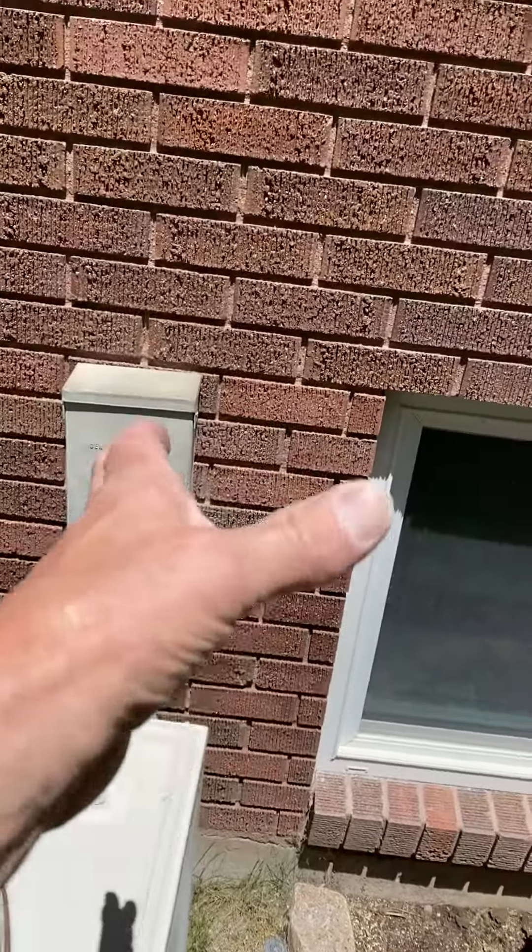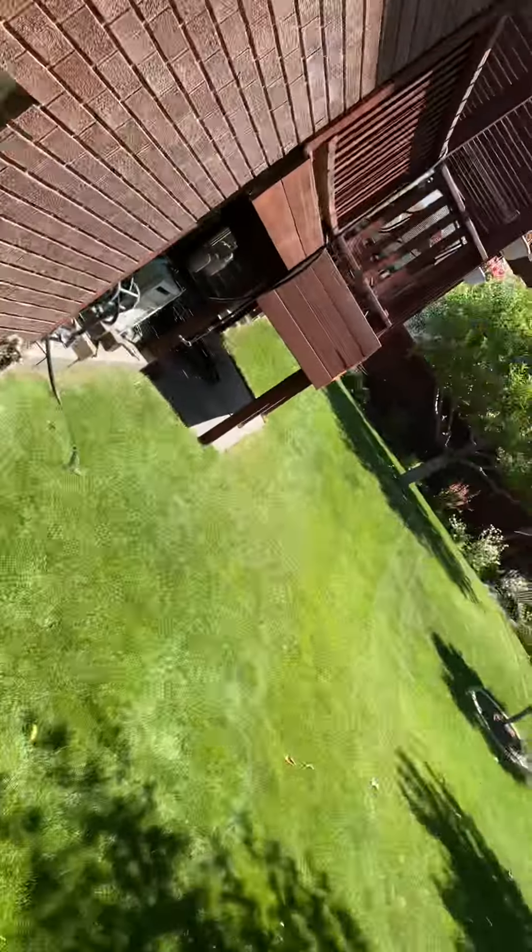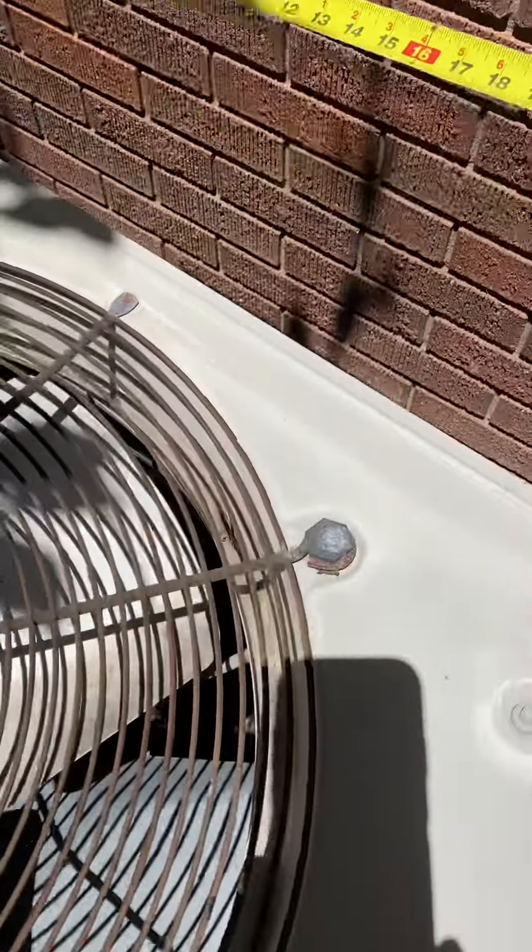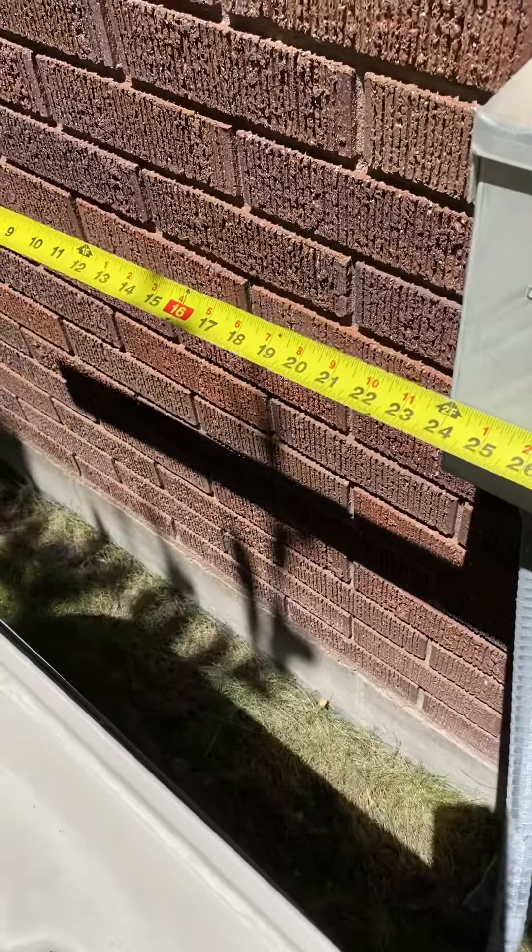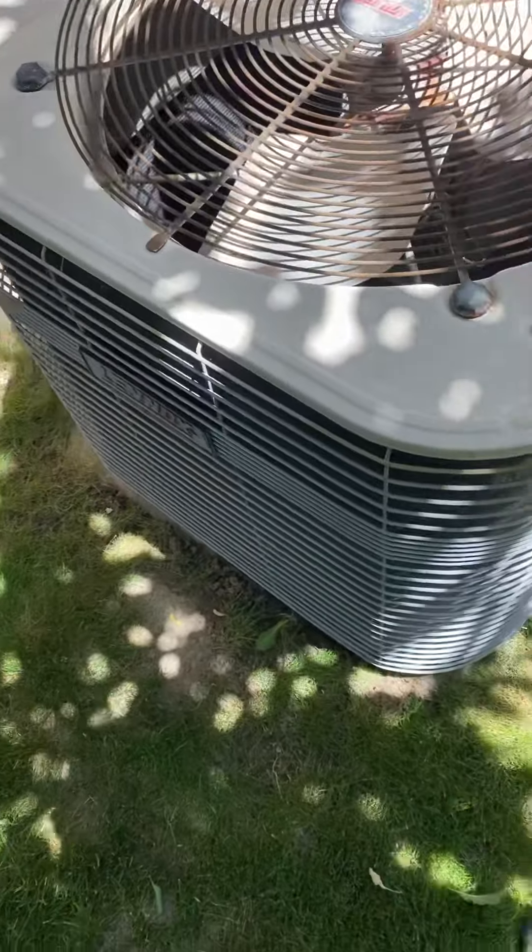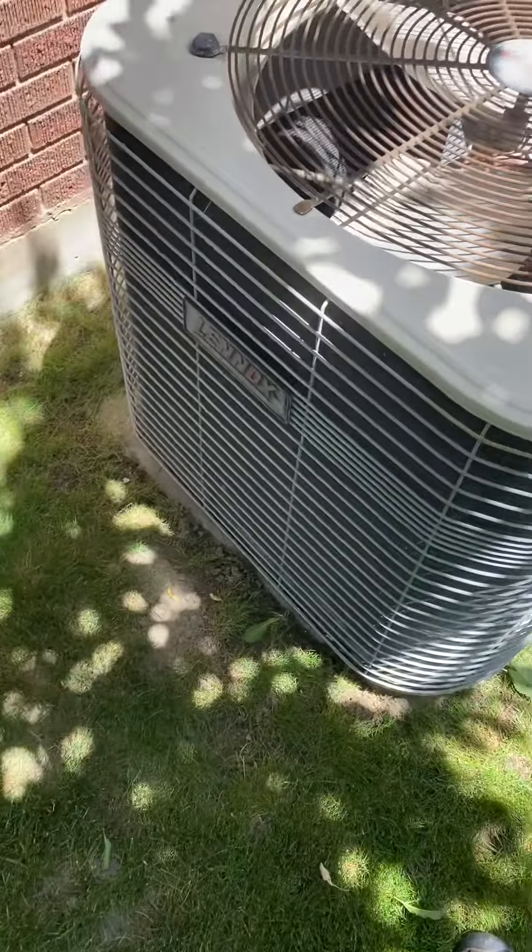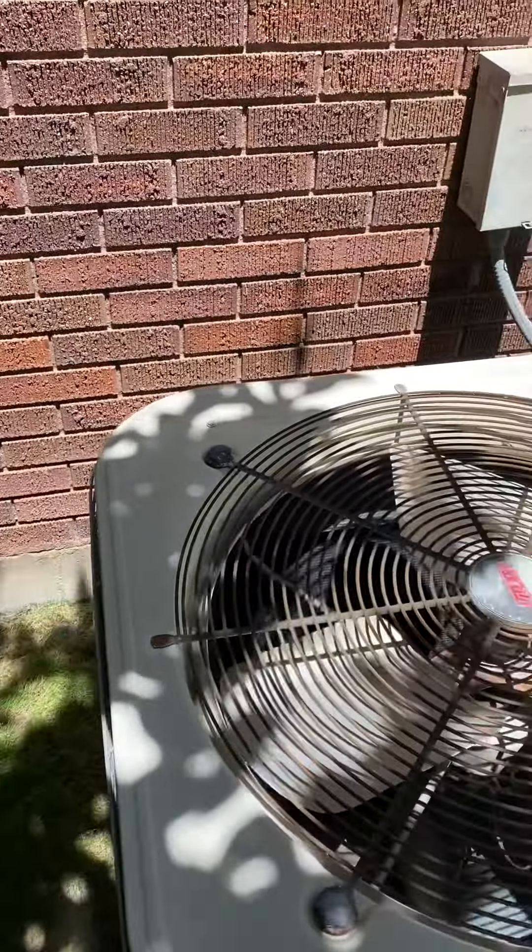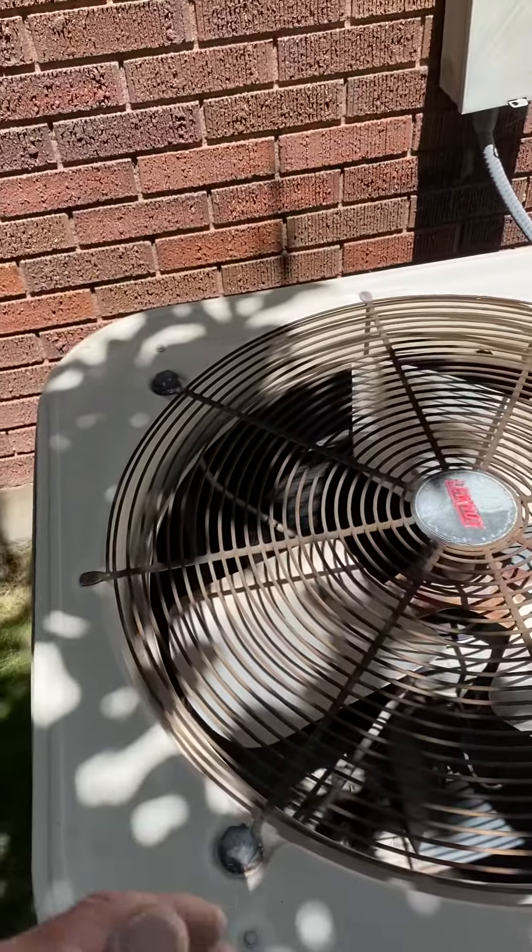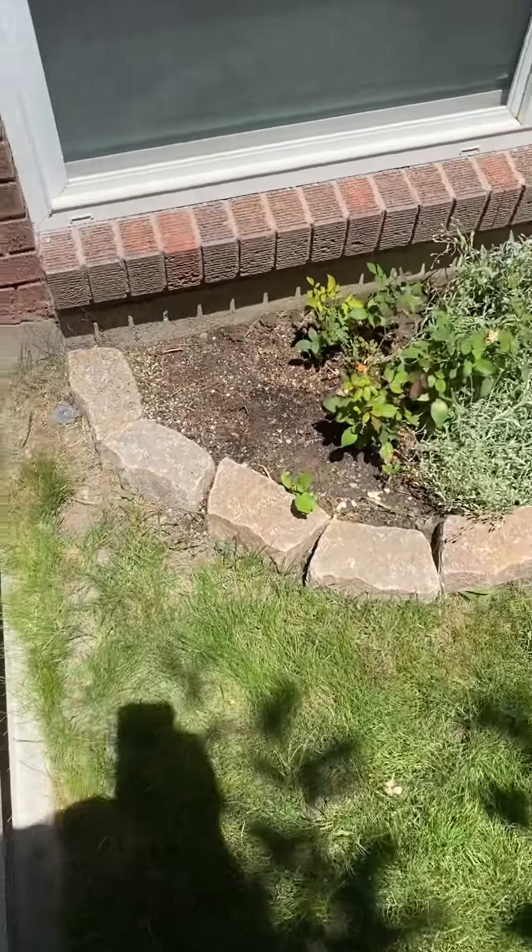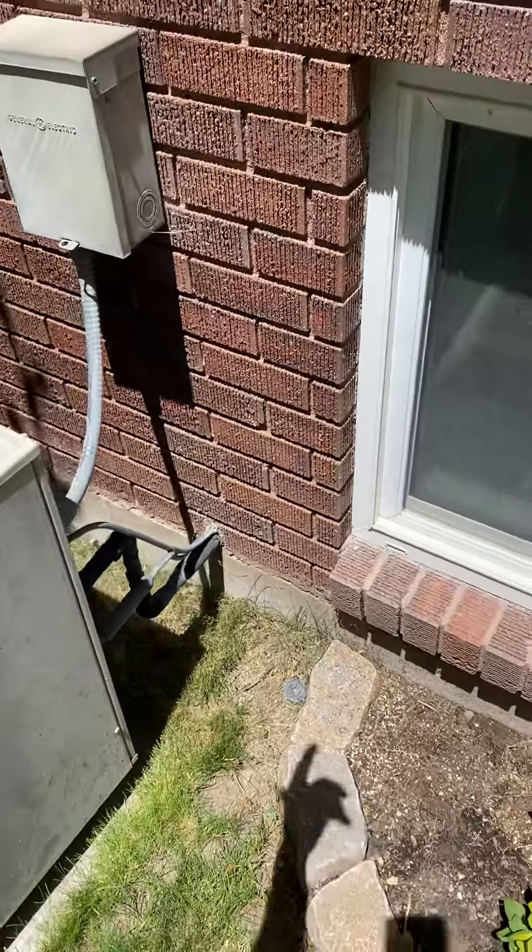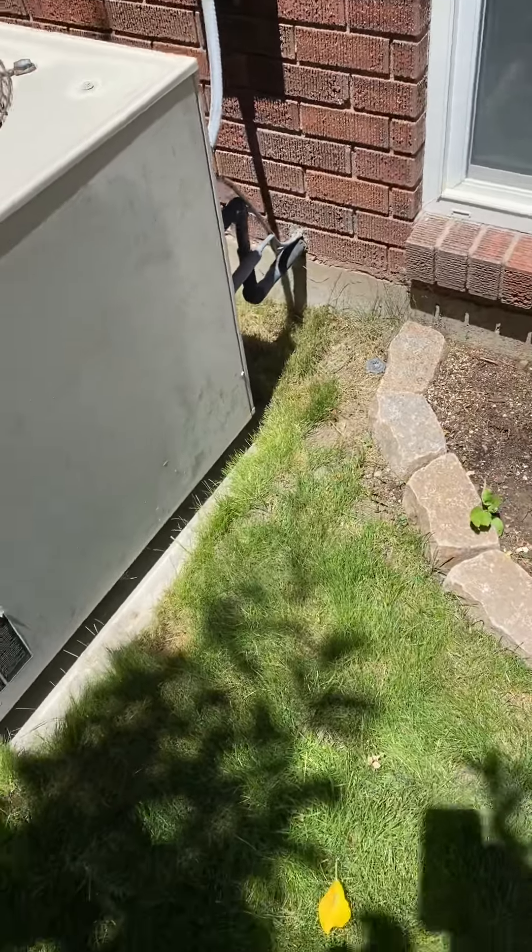So right now the AC sits in front of the disconnect. Our new unit is like 28 inches. So I'll give you a new 30 by 30 pad. Just sit it on top of this pad but scoot it over so we don't block the disconnect. Flush the lines and we use the existing disconnect. That's it.